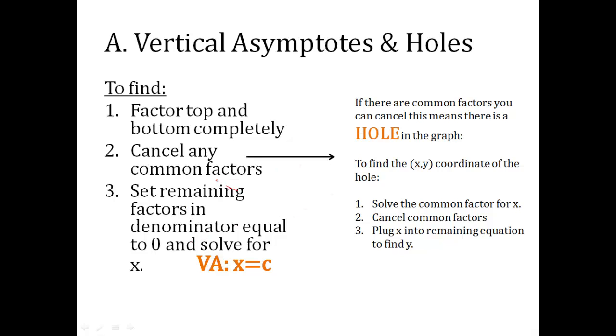Now, what happens if there are common factors? For instance, if like x minus one, let's say you had this. x minus one and x minus one are common factors. So those two would be canceled out. And to set remaining factors equal to zero in the denominator. So I would just, for vertical asymptote, I would just set the x plus four equal to zero and solve it for x.